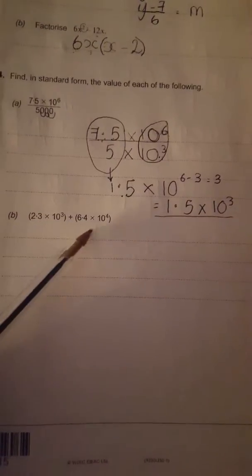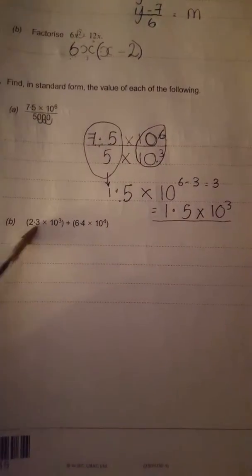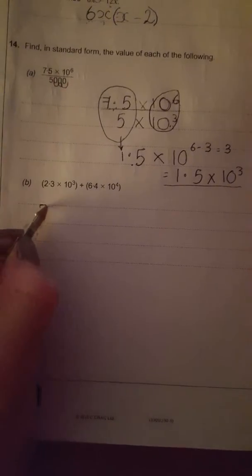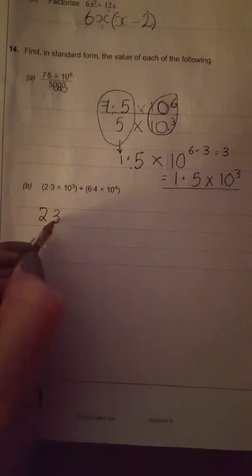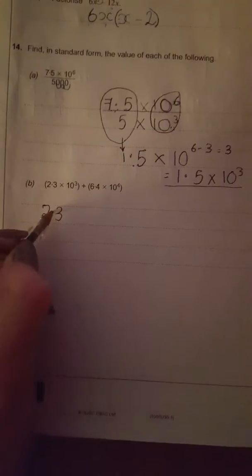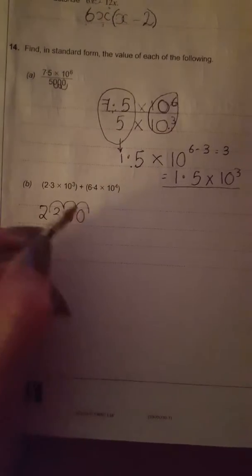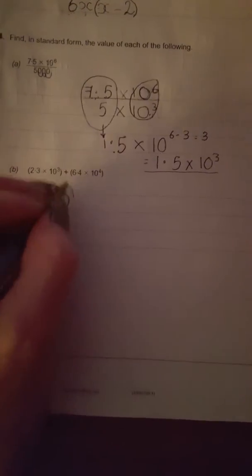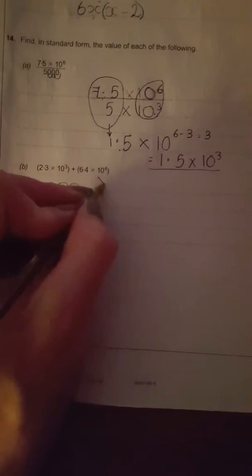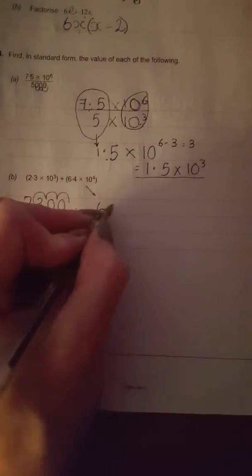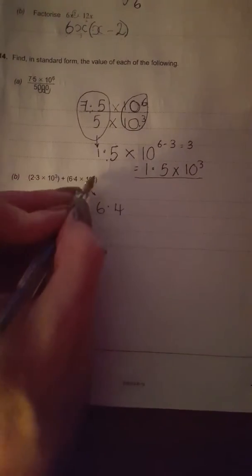So the best thing to do is make these two brackets into ordinary numbers. So it's to the power of 3, so you're going 1, 2, 3, plus we've got 6.4 to the power of 4.